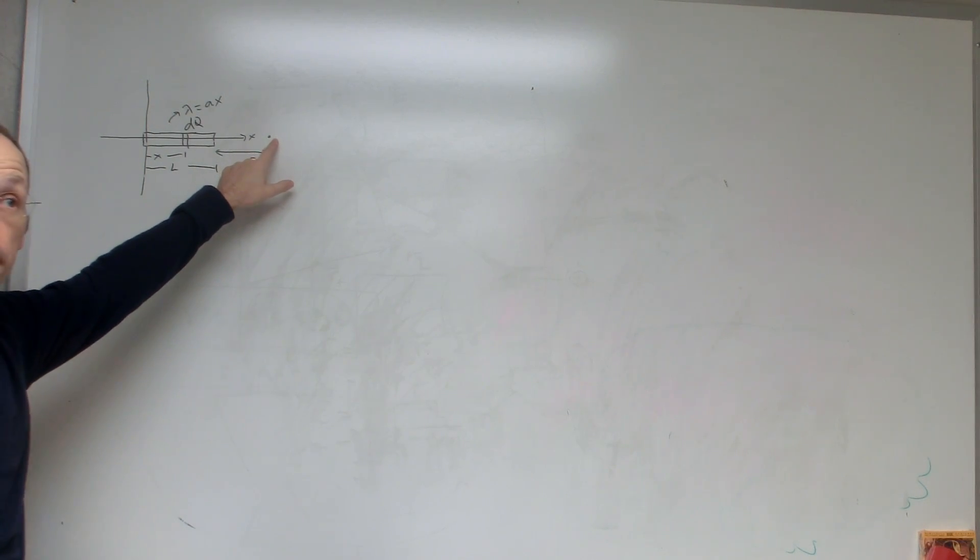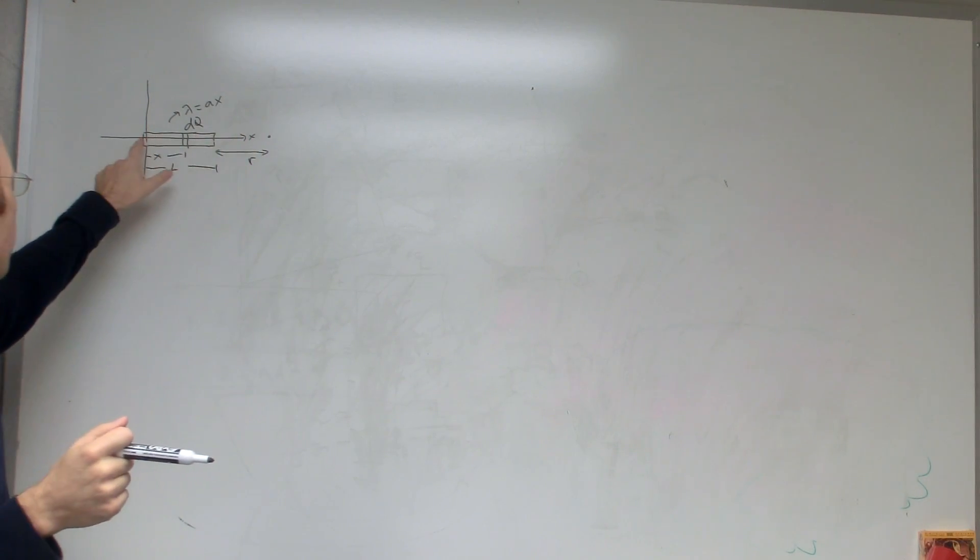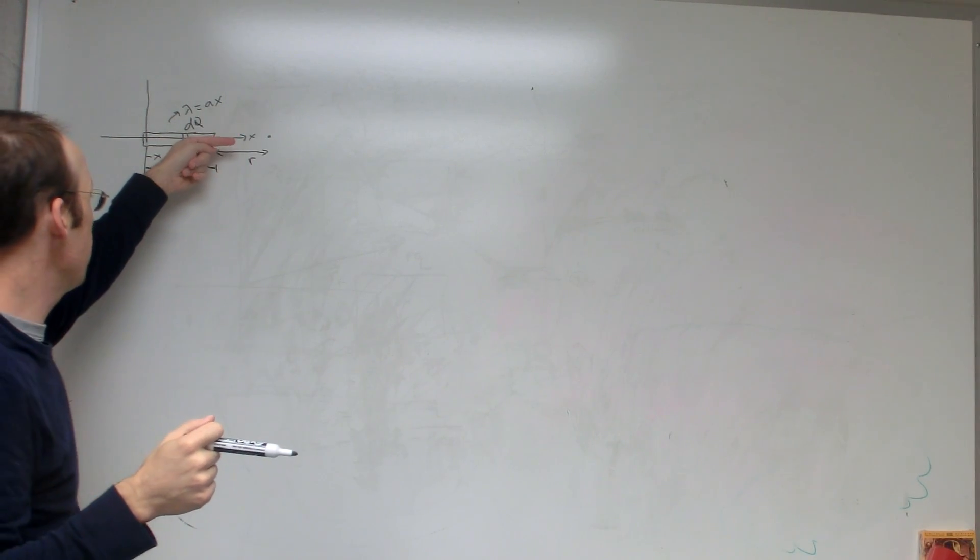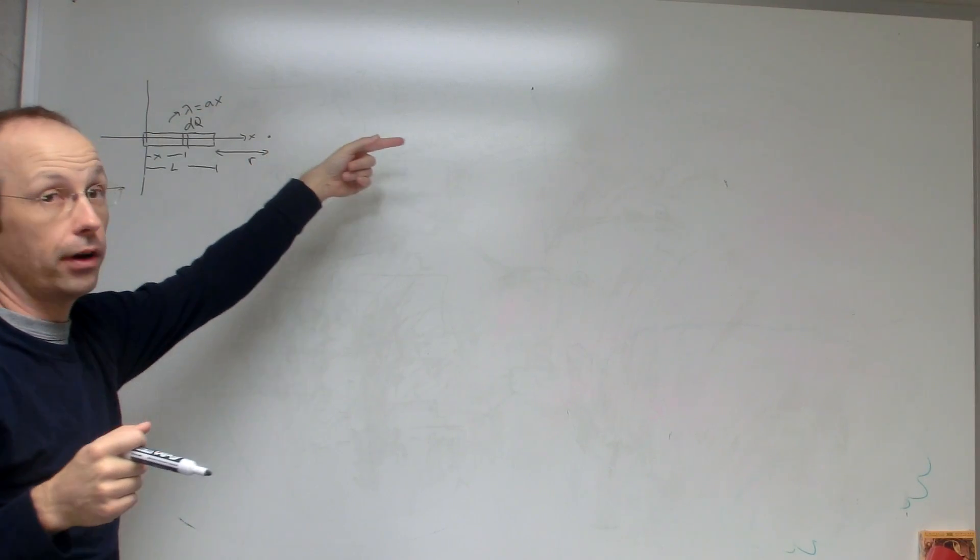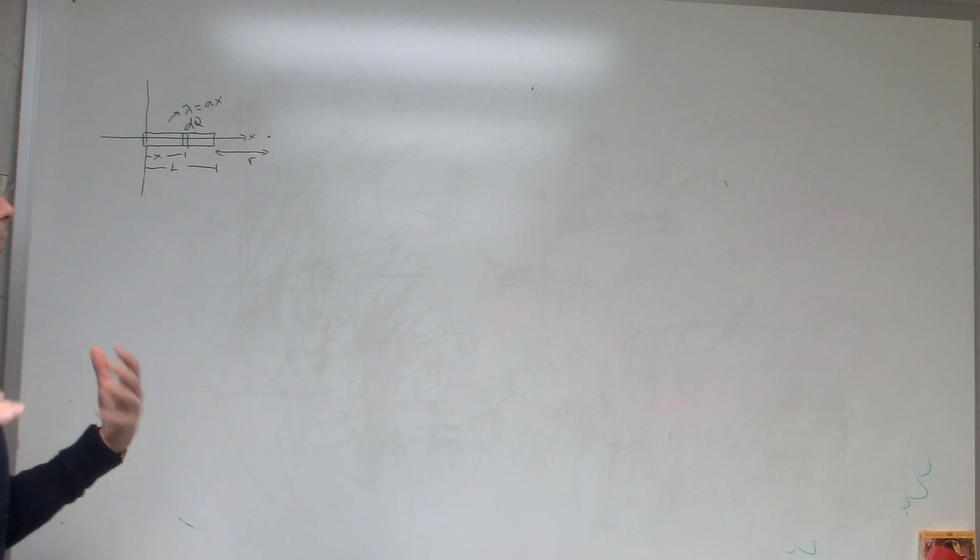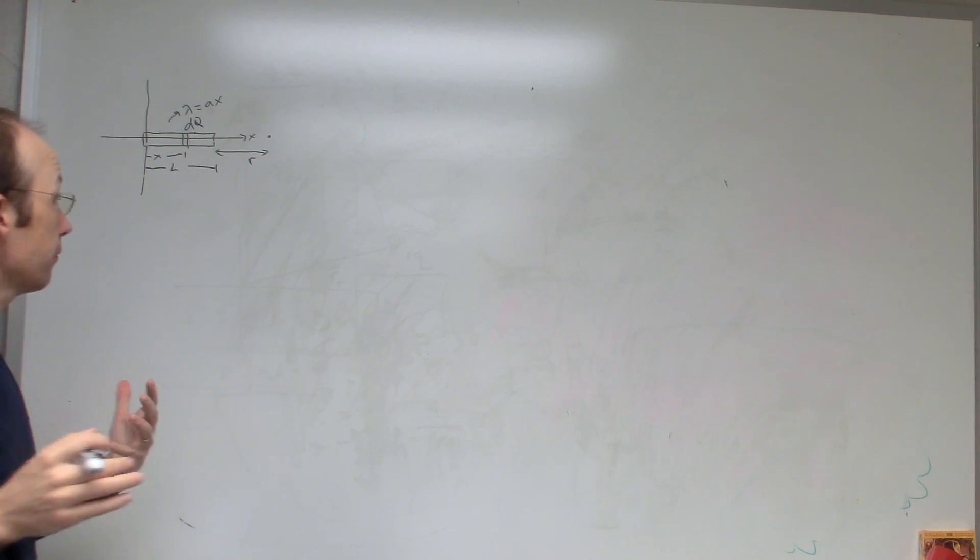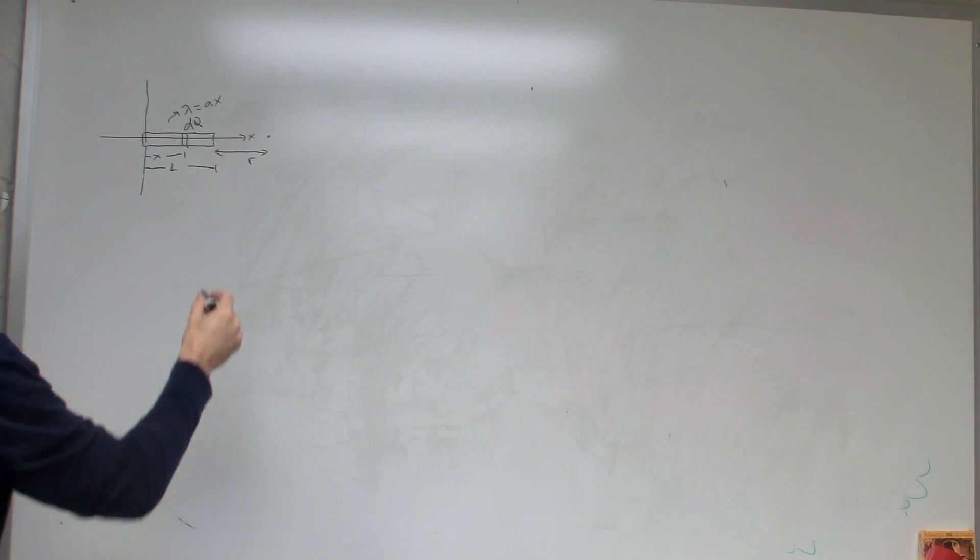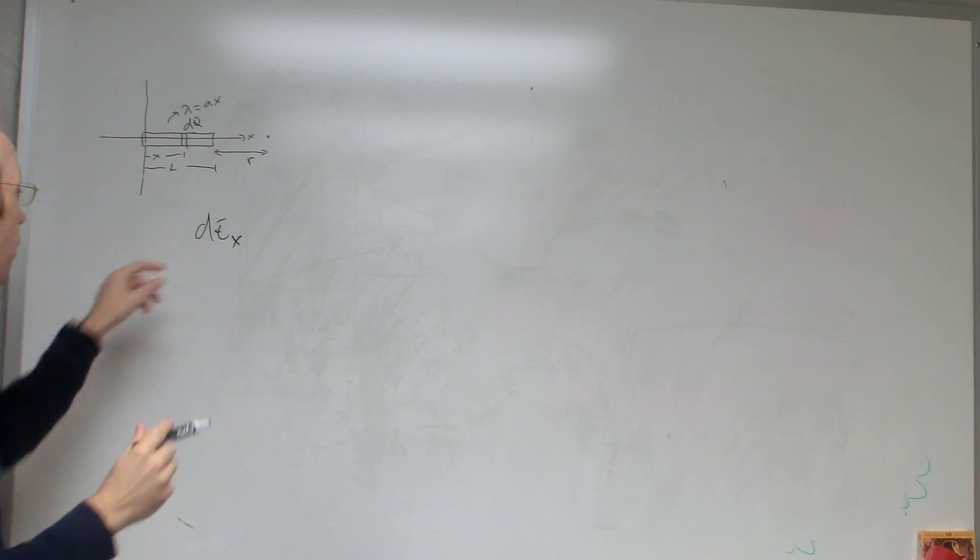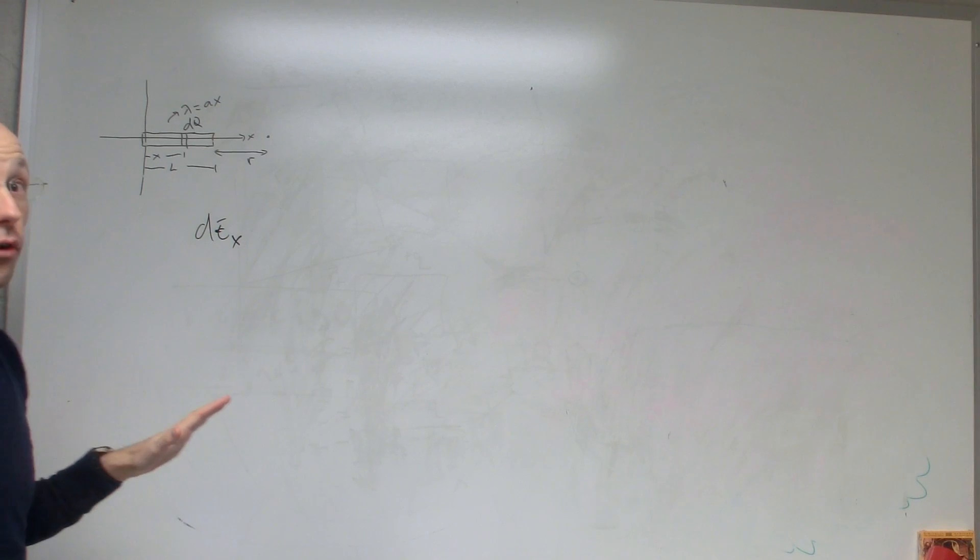Then I need to write down the electric field due to that piece right here. First let's use a little bit of symmetry. All of these are positive, all these pieces are going to make contributions to electric field that way, if we call that the x direction. So I don't have to find components of electric fields, they're all going to be in the same direction. So really I could just write dEx, so it's the x component of the electric field. That's the only thing that survives.